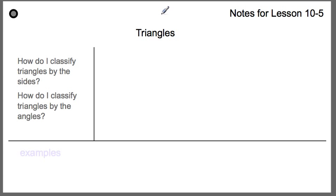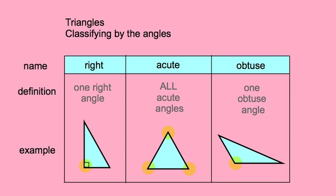Here are our notes for today's lesson: how do I classify triangles by the sides, and how do I classify triangles by the angles? All of the triangles we look at today are going to have two different names. First, we're going to classify triangles by the angles. There are three different names: right triangle, acute triangle, and obtuse triangle.